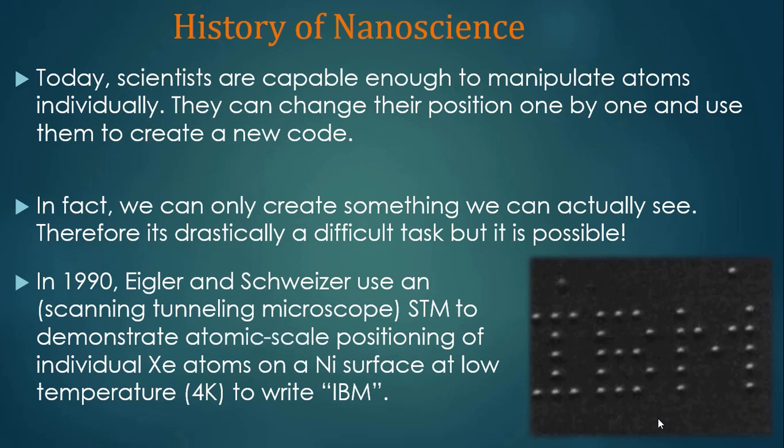In 1990, Eigler and Schweizer used a scanning tunneling microscope (STM) to demonstrate atomic-scale positioning of individual xenon atoms on a nickel surface at very low cryogenic temperature to write 'IBM.' As shown in this figure, IBM is written using xenon atoms on a nickel surface.